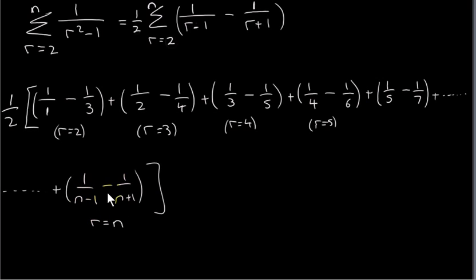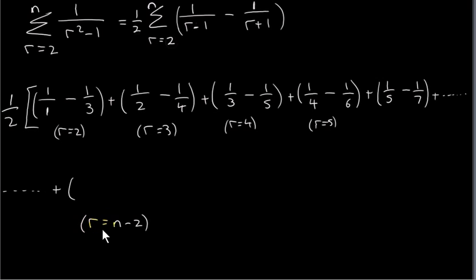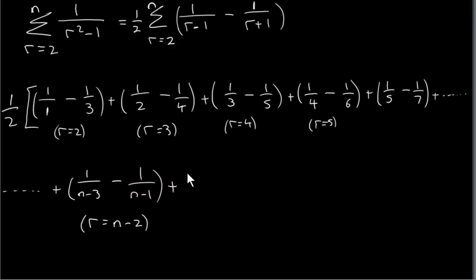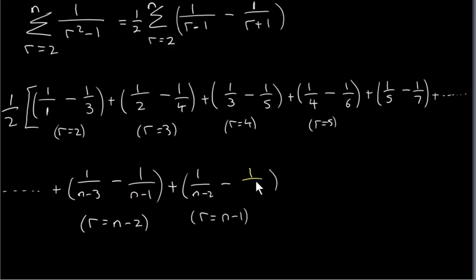To see the pattern more clearly, I'll write out not just the last term but also the third-last and second-last terms. The third-last term is obtained by replacing r with n minus 2: we get 1 over (n minus 2 minus 1), which is 1 over (n minus 3), minus 1 over (n minus 2 plus 1), which is 1 over (n minus 1). The second-last term, r equals n minus 1, gives 1 over (n minus 2) minus 1 over n.